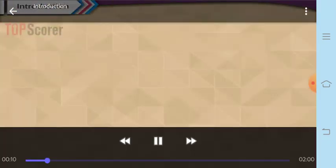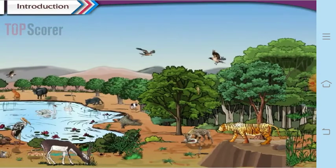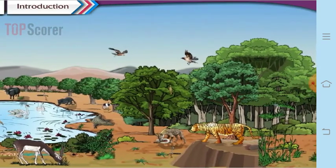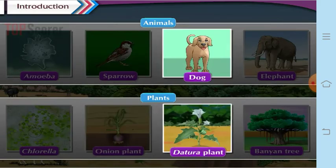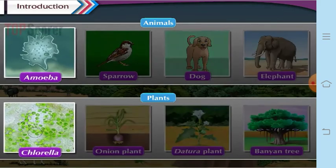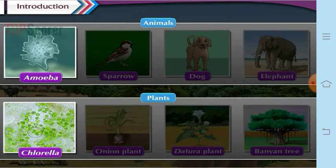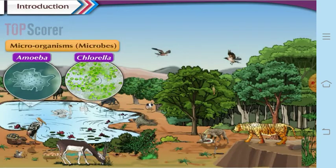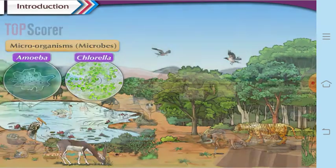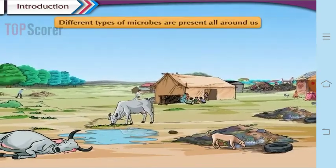Our living world is made up of different kinds of living organisms, ranging from the smallest to the largest. They vary in their size, shape, and even the complexity of their structure. Some of them are very small whereas some are very large. There are even certain organisms which are unable to be seen with our naked eyes, so for them we require something called a microscope.